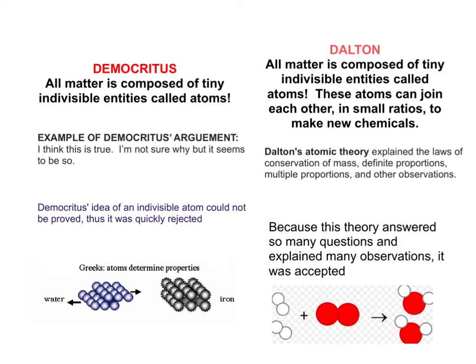About 2,000 years later, Dalton reopened the idea that Democritus had. That matter was composed of tiny, indivisible entities that were also called atoms. What Dalton brought to the table was the fact that he could take those atoms and join them together in small ratios to make new chemicals.